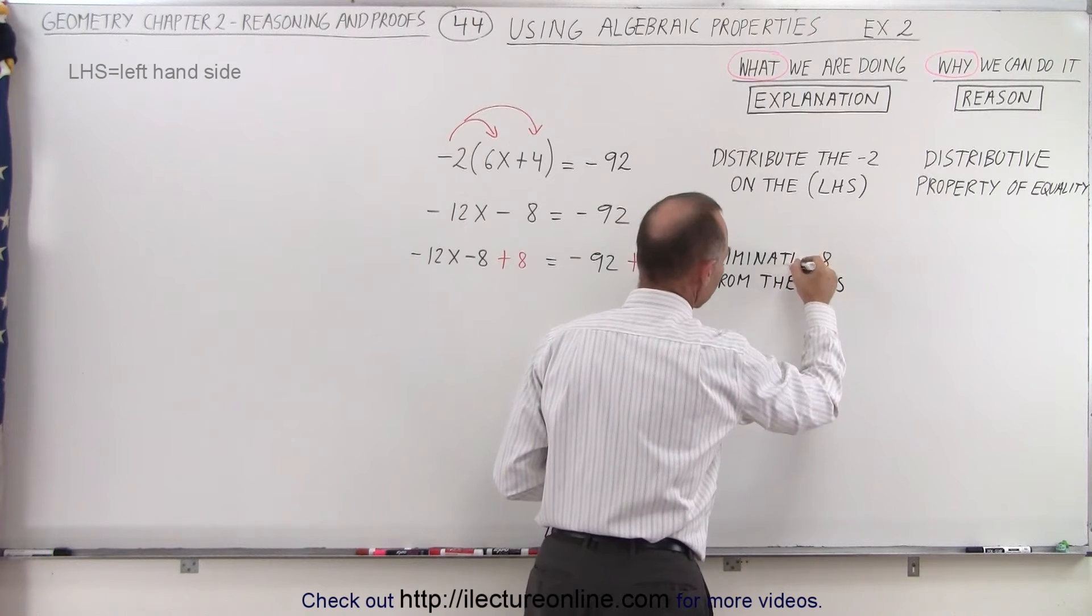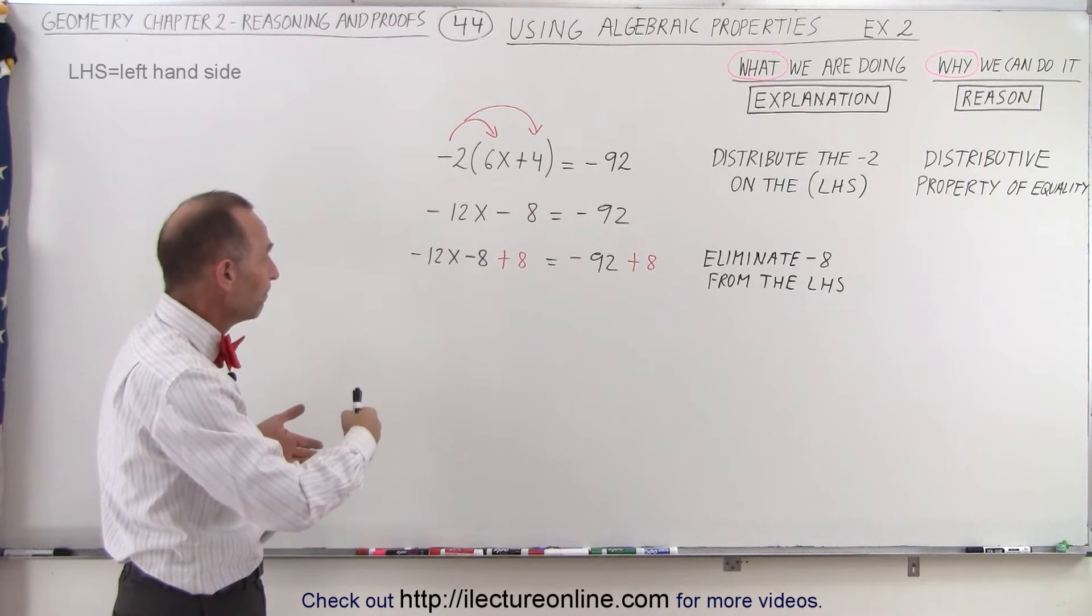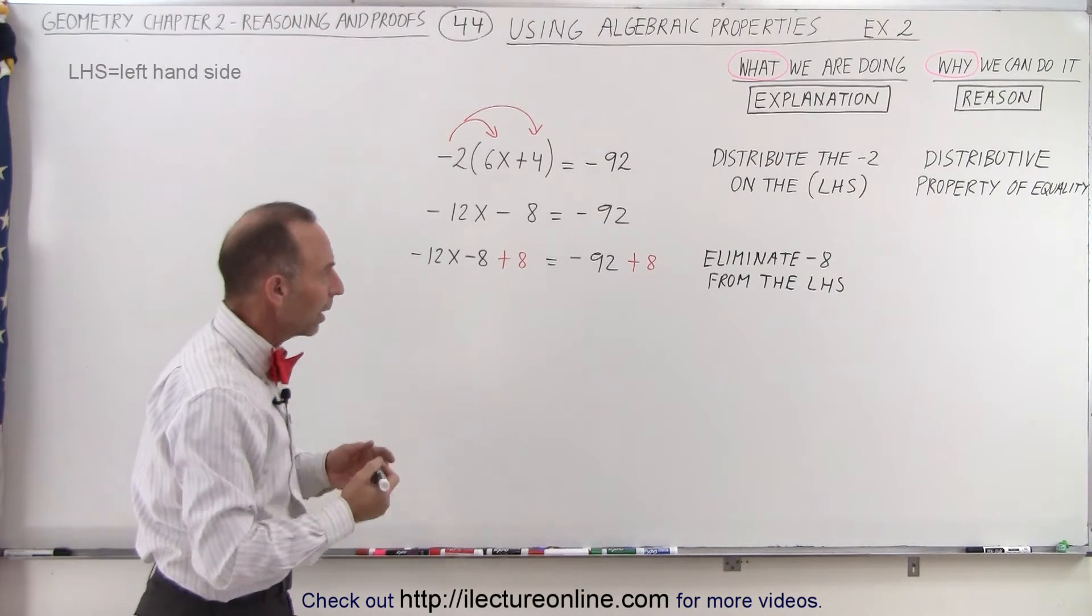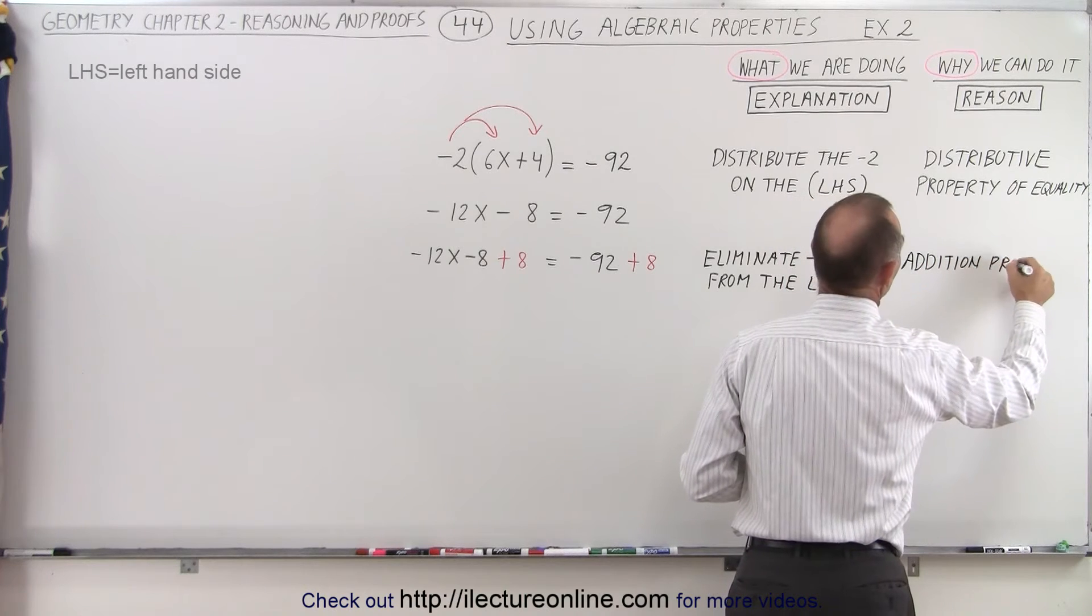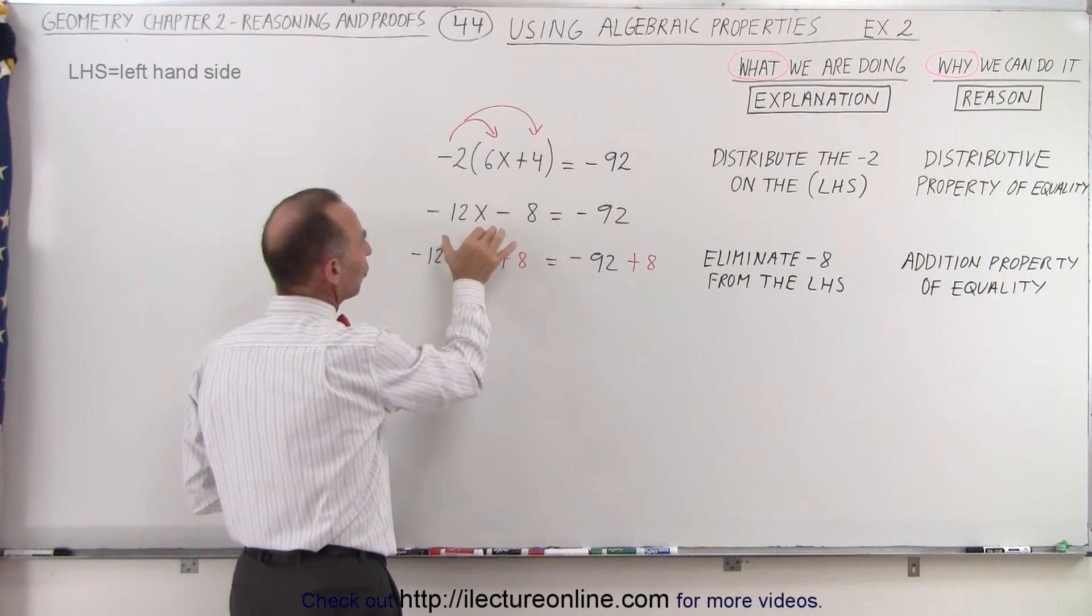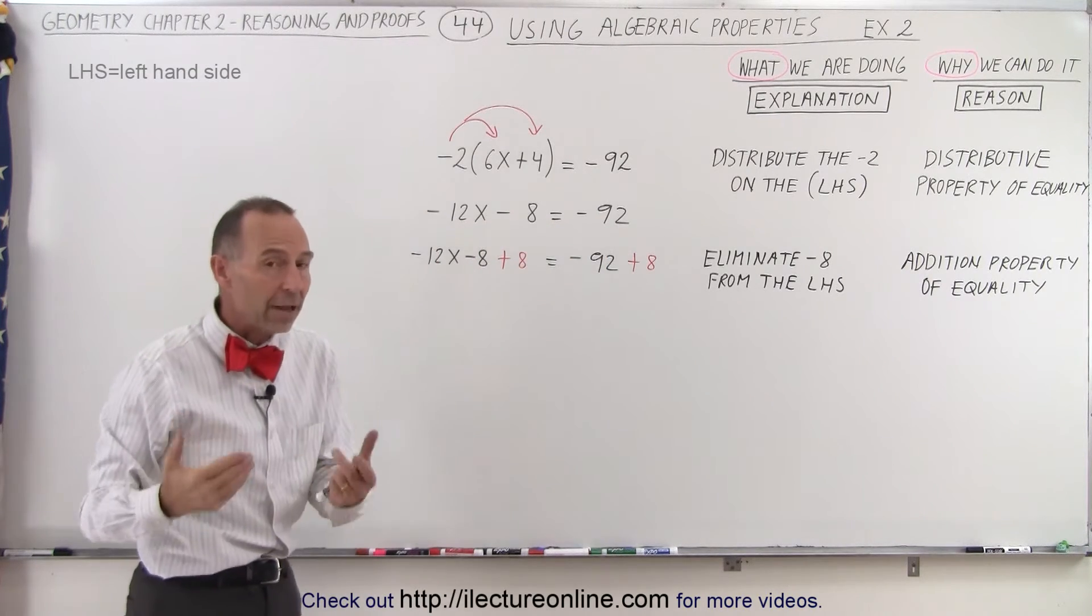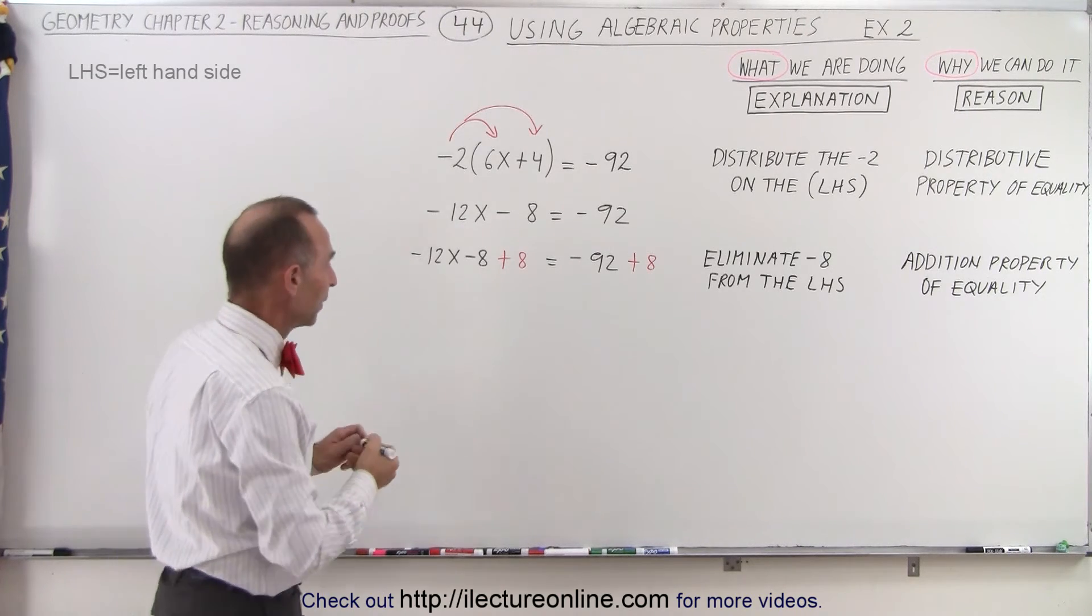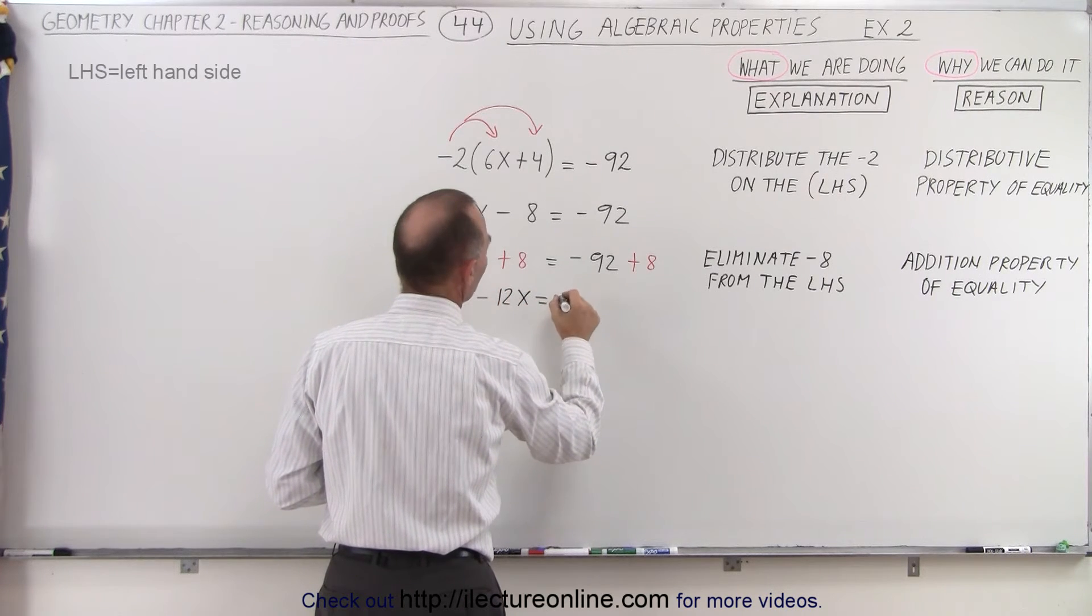Now, I'm missing an E there. So the question is, why am I allowed to do that? Why can I add an 8 to the left side and add an 8 to the right side? That's because there's an algebraic property that allows me to do so. It's called the addition property of equality, which means that if I have two sides that are equal to each other, since minus 12x minus 8 is equal to minus 92, it allows me to add the exact same amount to both sides, and the left side will still equal the right side. When I execute this step, I get minus 12x is equal to minus 84.